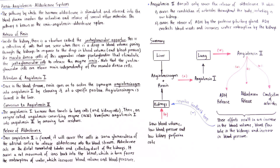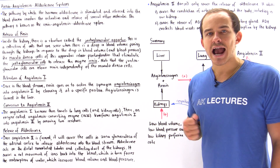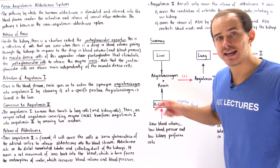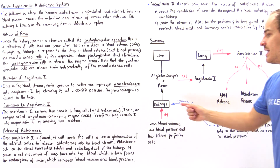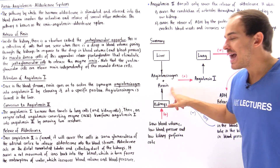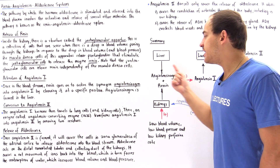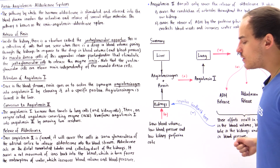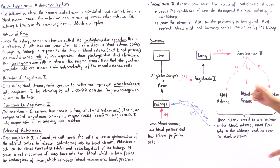Looking at the full diagram of the renin-angiotensin-aldosterone system: low blood plasma volume and low blood pressure mean low perfusion rate inside our kidneys. This causes juxtaglomerular cells to release renin. At the same time, liver cells produce and release angiotensinogen. When these two mix, renin cleaves angiotensinogen to form angiotensin I, which then travels to lung and kidney cells and is converted by ACE into angiotensin II.